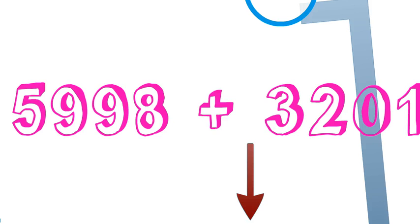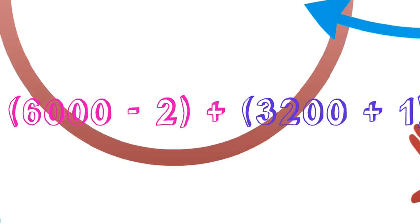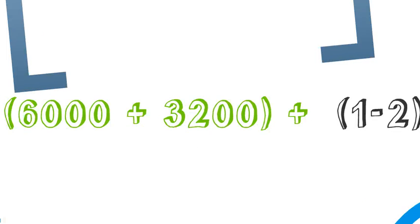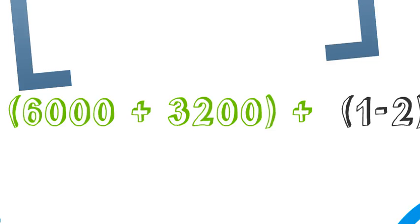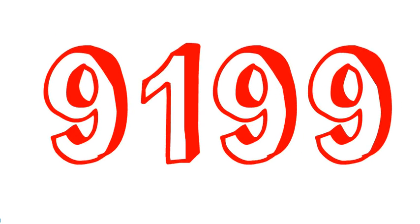Let's check with one more example. Let's add 5998 and 3201. Simplify the problem as 6000 minus 2 and 3200 plus 1. Shift the larger and smaller numbers to one side, which gives us 6000 plus 3200 plus 1 minus 2, equaling 9200 minus 1. Subtract 1 from 9200 and we get 9199. Easy?